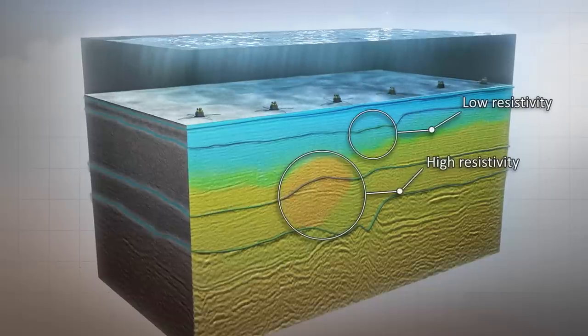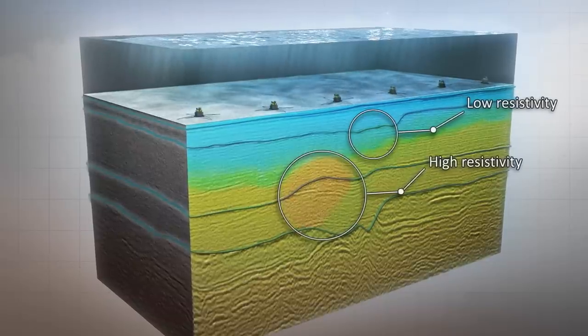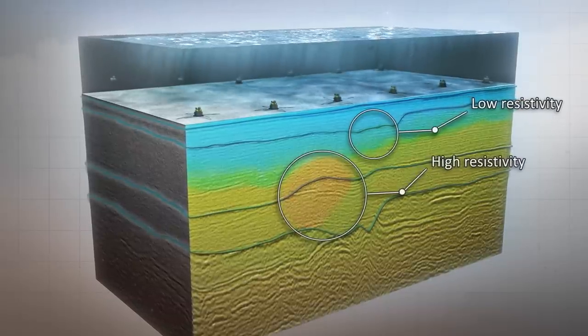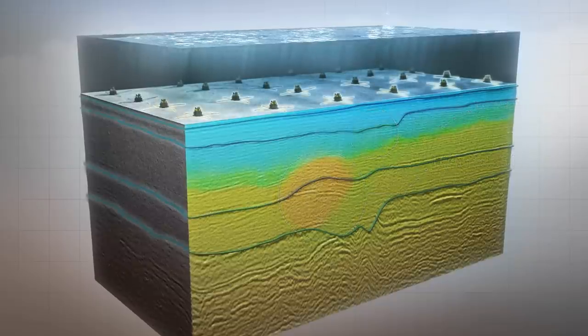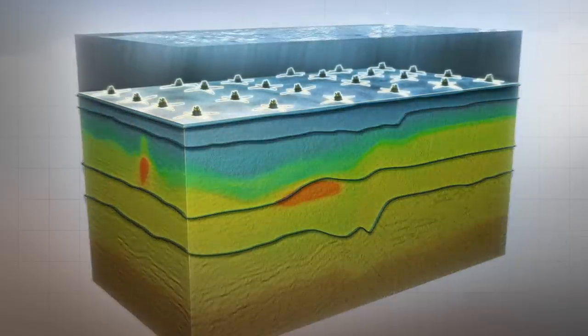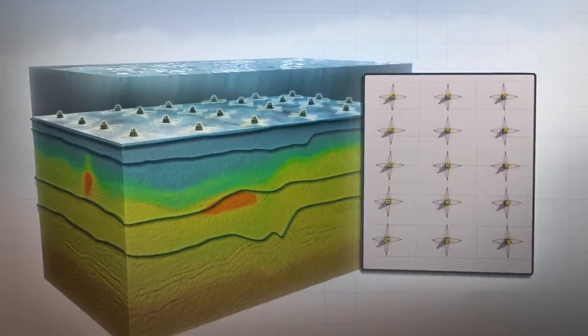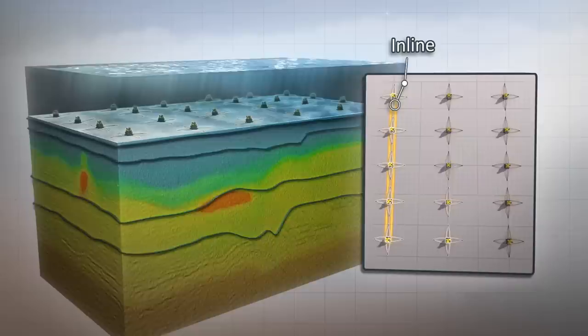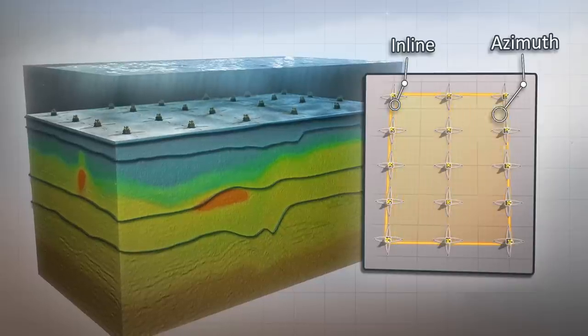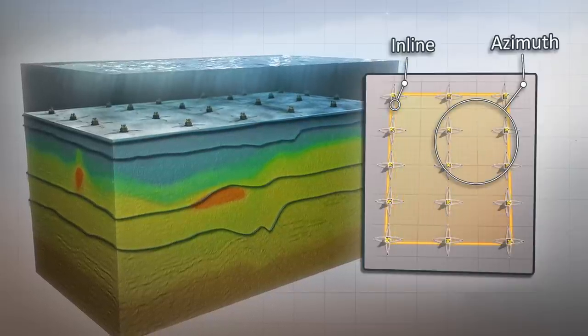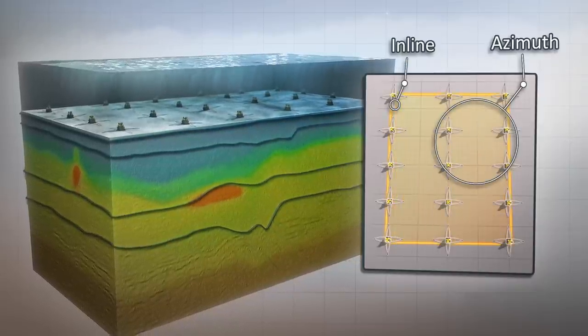From one line of receivers, we can image a vertical section with however limited resolution and depth positioning. In a 3D survey, a grid of active receivers record both inline and azimuth data. This allows us to map resistivity variations in all three dimensions, providing increased coverage and resolution.